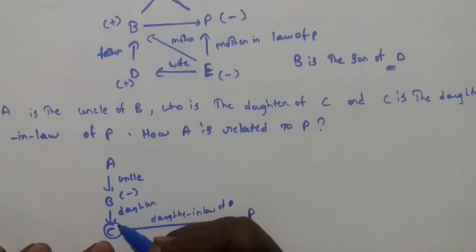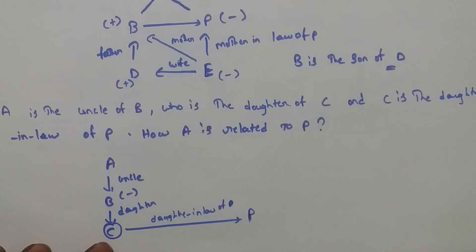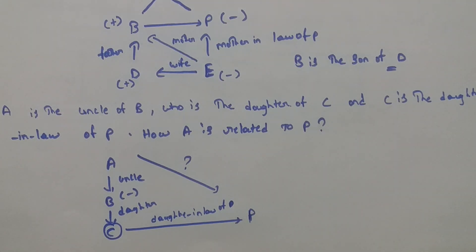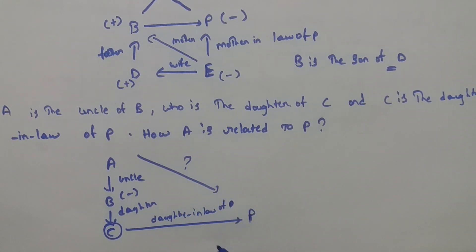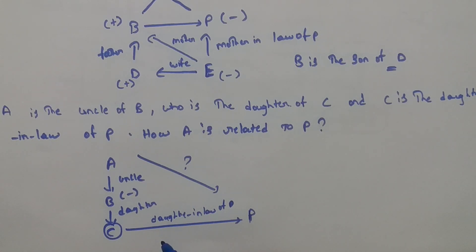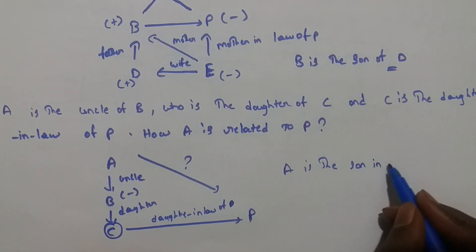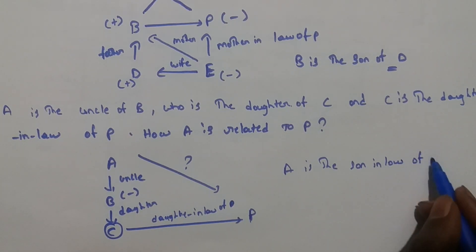The question is how A is related to P. Now, uncle's daughter — A is the uncle of B, and B is the daughter of C. Uncle's daughter becomes a brother. Then brother's daughter-in-law equals son-in-law. So A is the son-in-law of P.